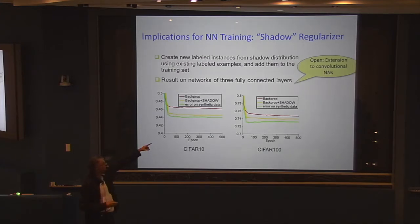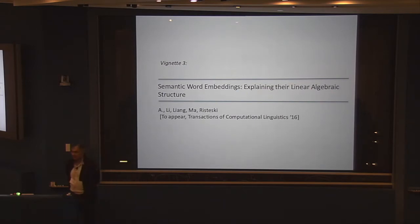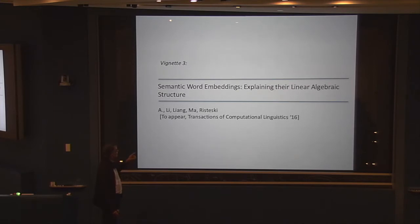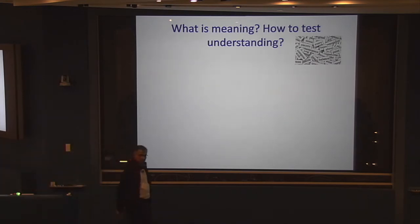The last part is semantic word embeddings — joint work with Yuanji Li, Yingyu Liang, Teng Yuma, and Andrei Rischewski. This goes to goals of artificial intelligence people have had for many decades — Turing tests, what is meaning? One simple task identified was solving analogies: man is to woman as king is to... Can a computer solve such analogies given only a text corpus like Wikipedia, with no examples of analogies? And you could think about knowledge augmentation: given the sequence Japan-Tokyo, China-Beijing, Germany-Berlin, can a computer give more examples?